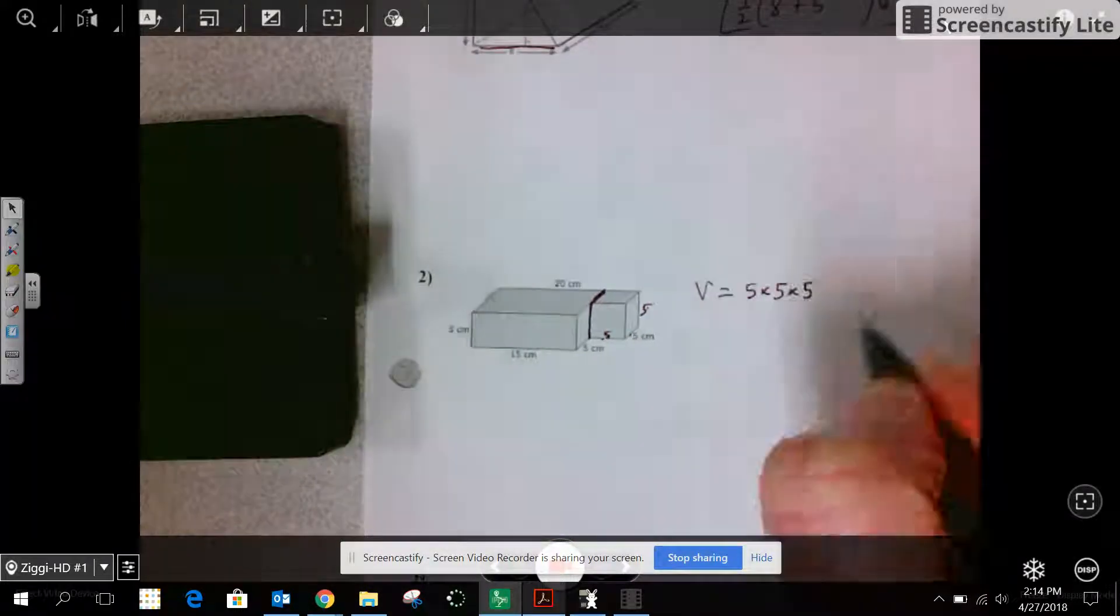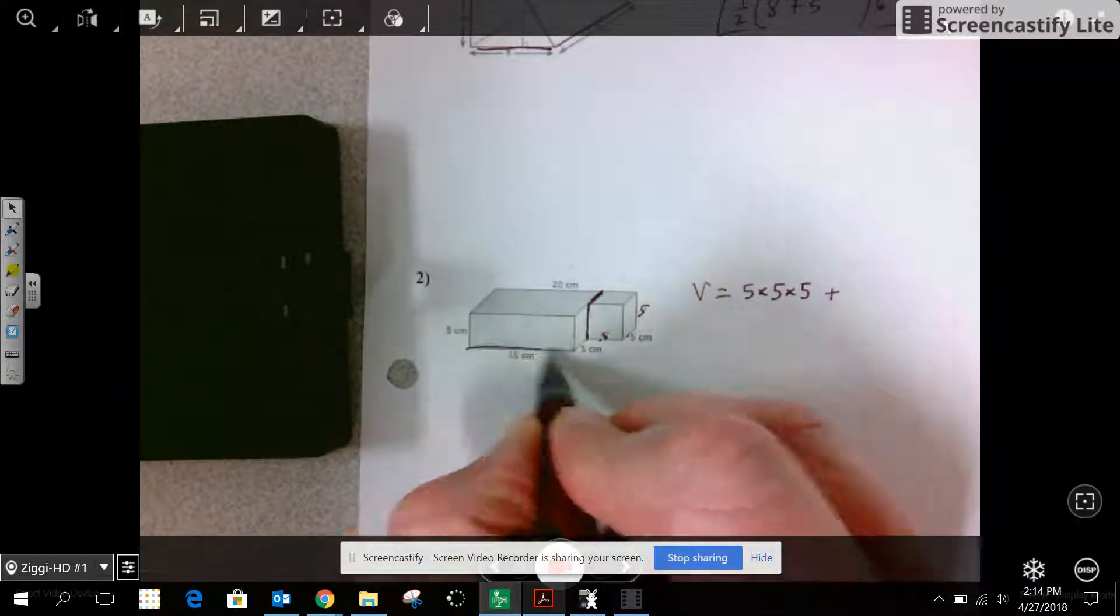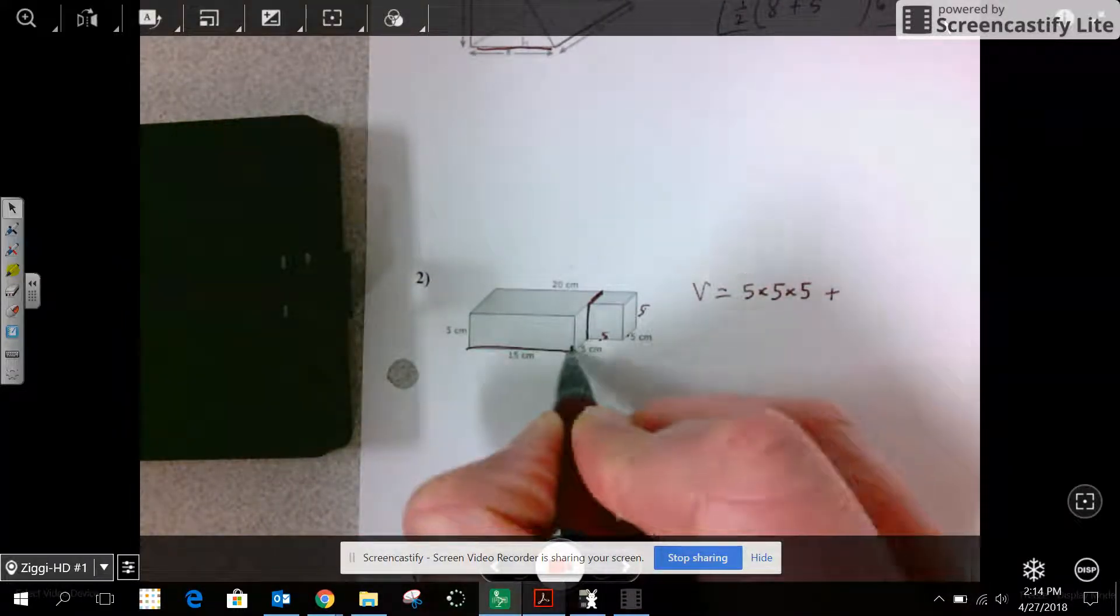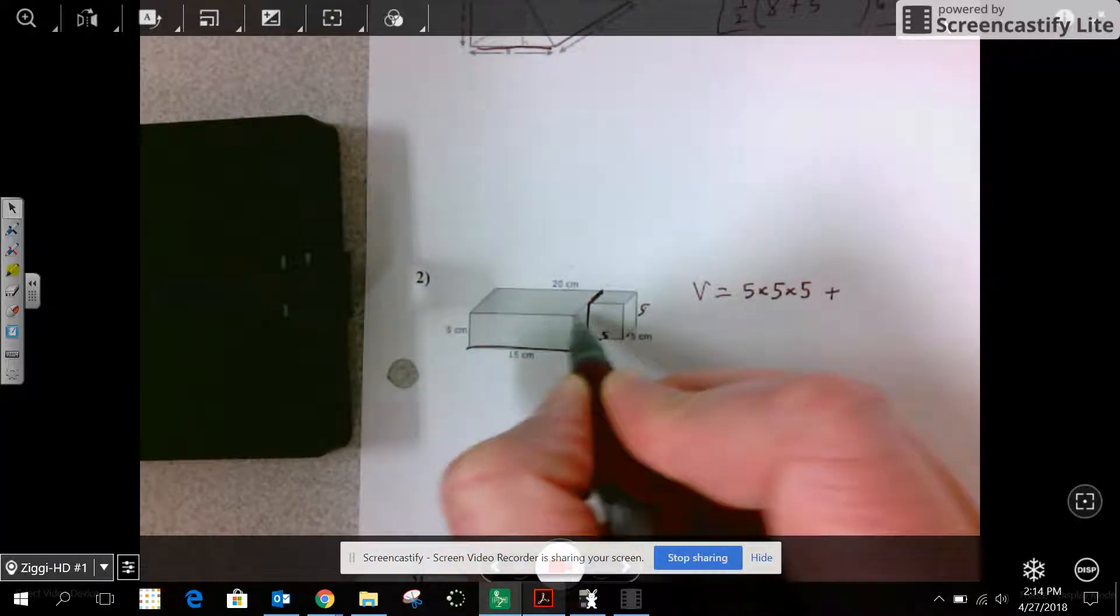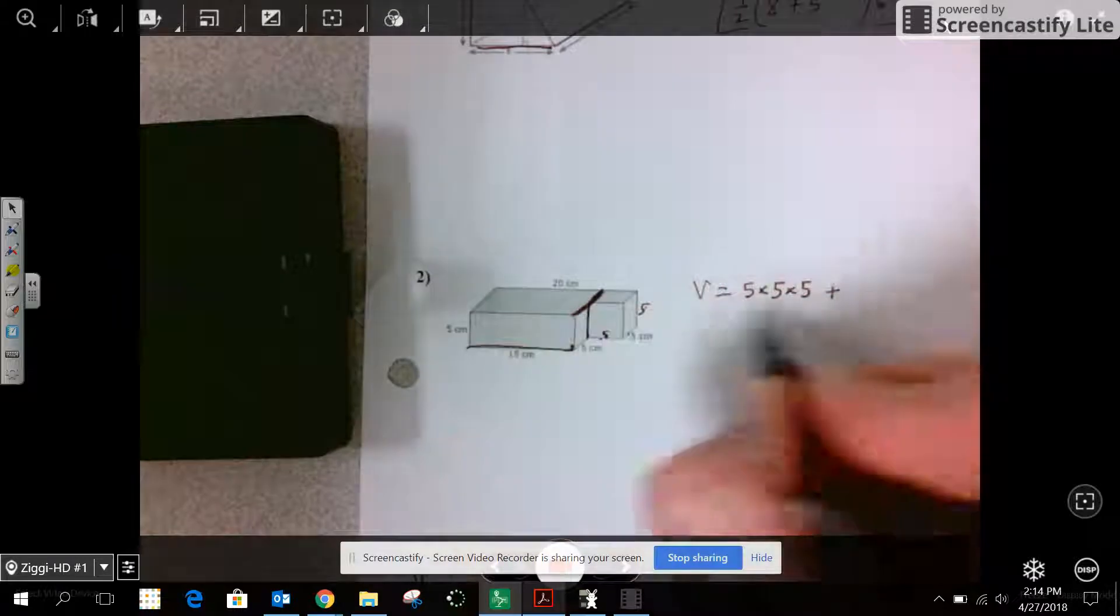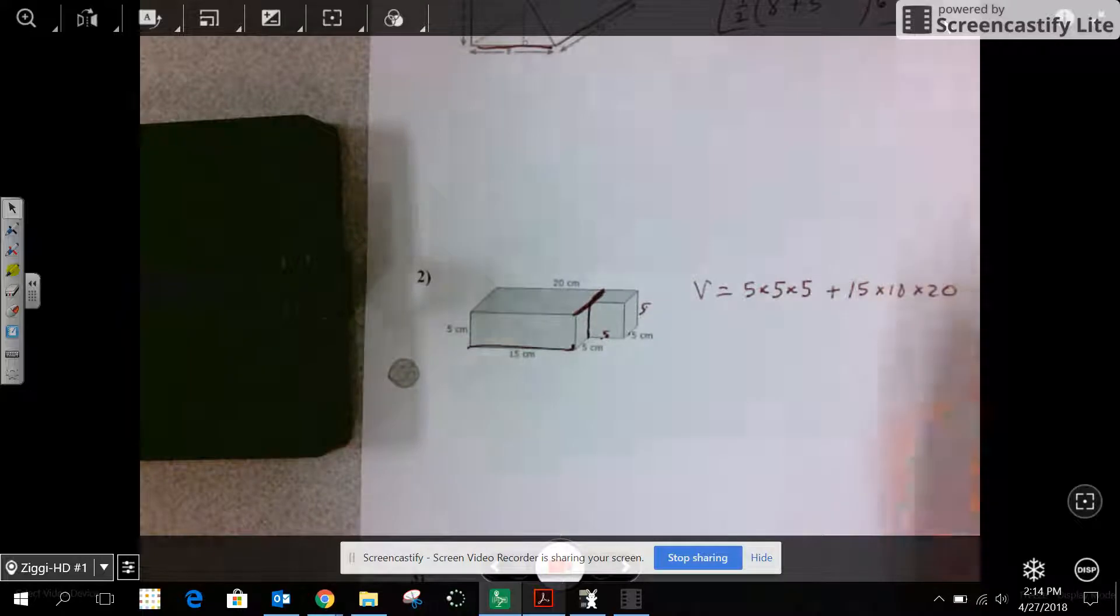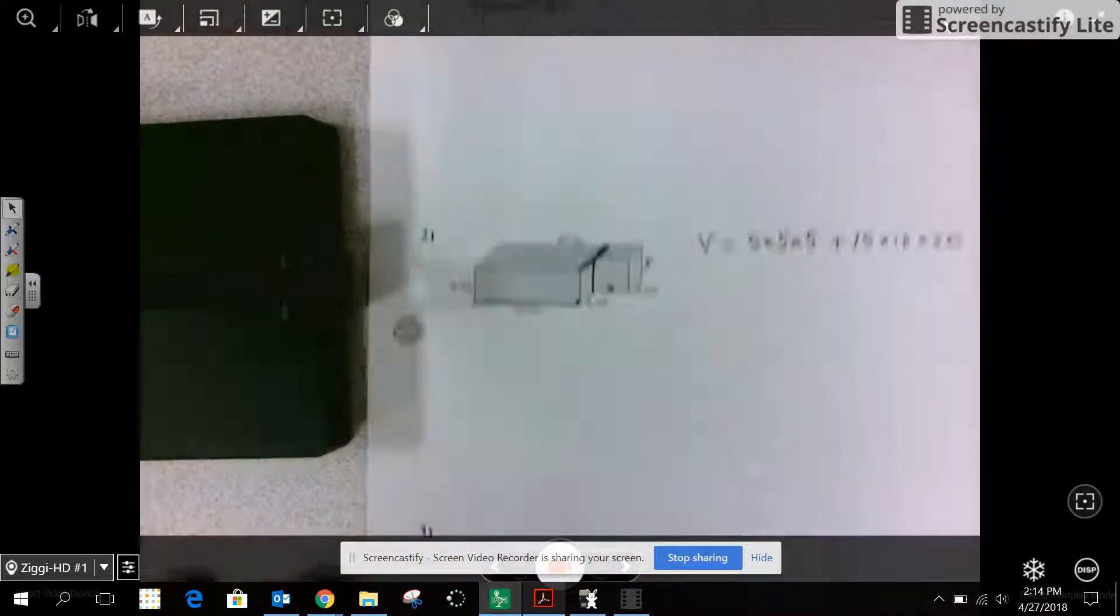You can do that with prisms using length times width times height. Plus I have this 15 by 10, because this distance is 10 by 20. And I can multiply those together, centimeters cubed.